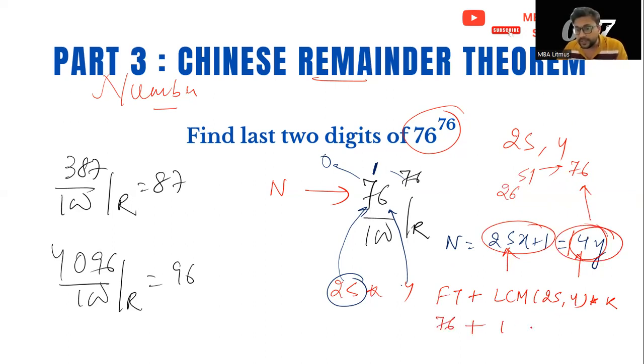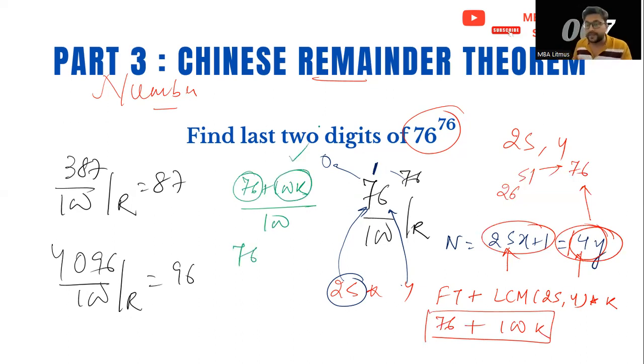So the first term which satisfies both is 76. LCM of 25 and 4 is 100 into K. This number in the numerator can be written as 76 plus 100K. If I can write this as 76 plus 100K and divide it by 100, my last two digits or remainder will be 76 because this number will be divisible by 100.